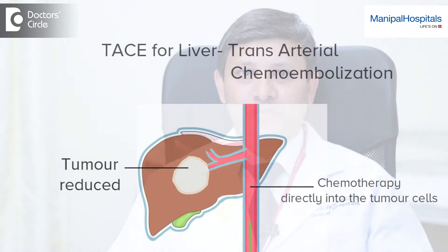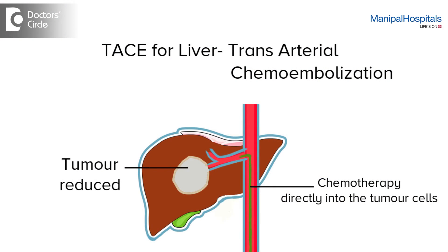TACE stands for transarterial chemoembolization. A catheter is inserted into your groin, that is to the femoral artery, and the catheter is forwarded to the hepatic artery and straight to the tumor, where chemotherapy and medical particles are injected through this catheter.